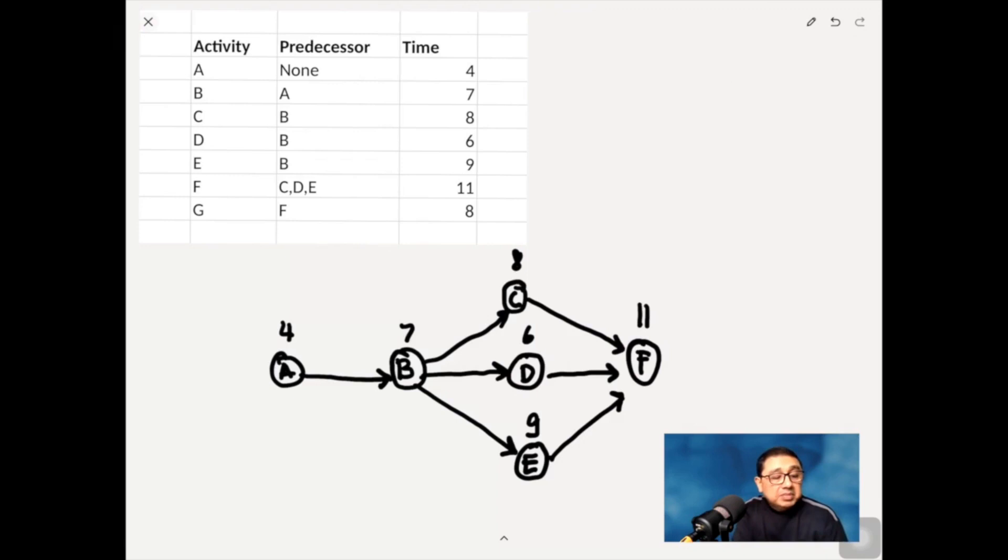And so you now go from F to G. So draw G, and then put in an arrow from F to G, and then there is an assignment of 8 units of time. So that's the network.